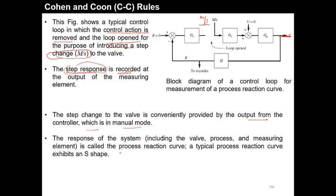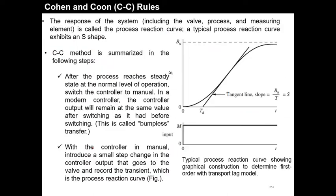Whatever the dynamic response of the system comes, it is recorded and that curve is known as the process reaction curve. This curve is similar to the general open loop curve — the typical process reaction curve exhibits an S-shape. We then find the inflection point, where the nature of the curve changes from convexity to concavity or vice versa. At that point, we draw the tangent.